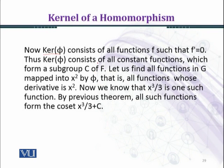We want to find the set of all those functions in G which are mapped into x² by φ. Now we know that x³/3 is one such function whose derivative equals x². By previous theorem, all such functions form the coset x³/3 + C.